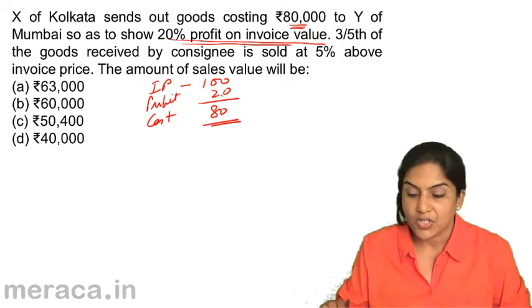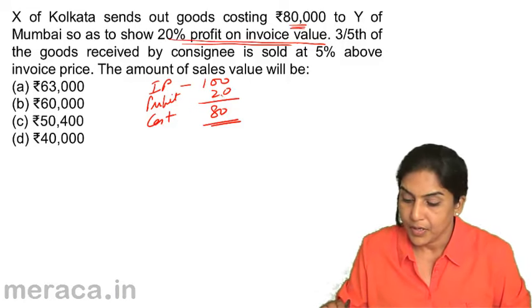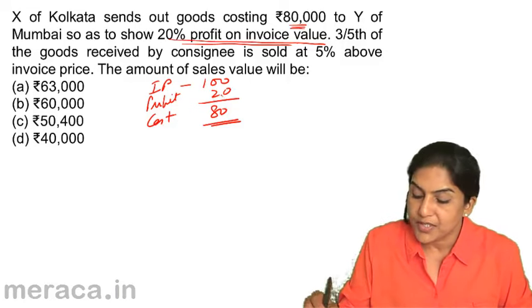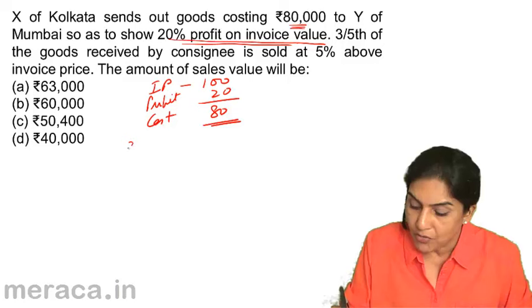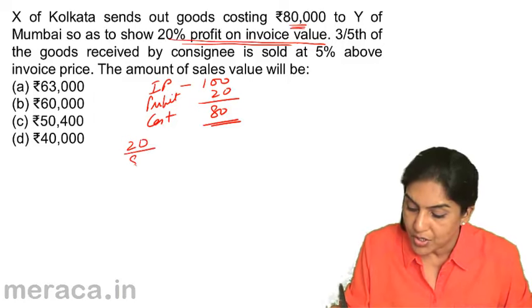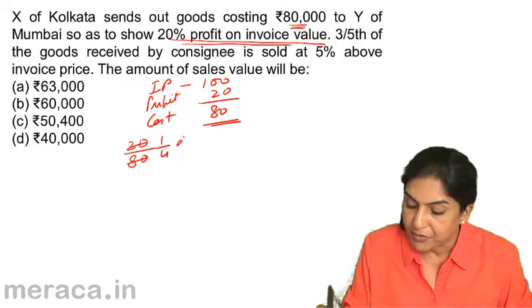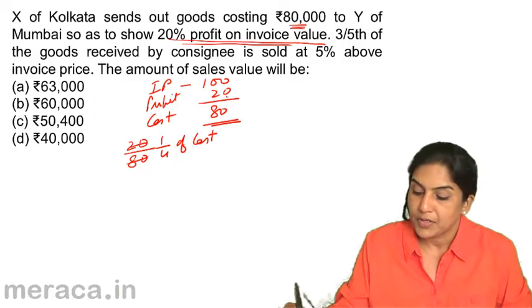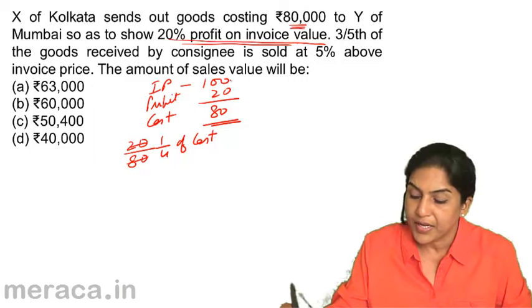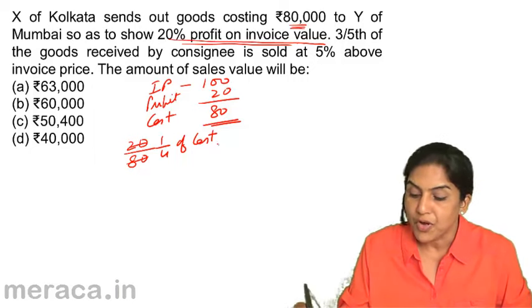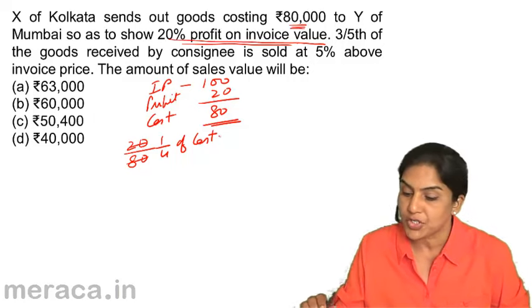What is the relation of profit to cost? It is 20 by 80, or 1/4 of cost — that is, 20 by 100 means 20% of invoice and one-fourth of cost, i.e., 25% of cost.